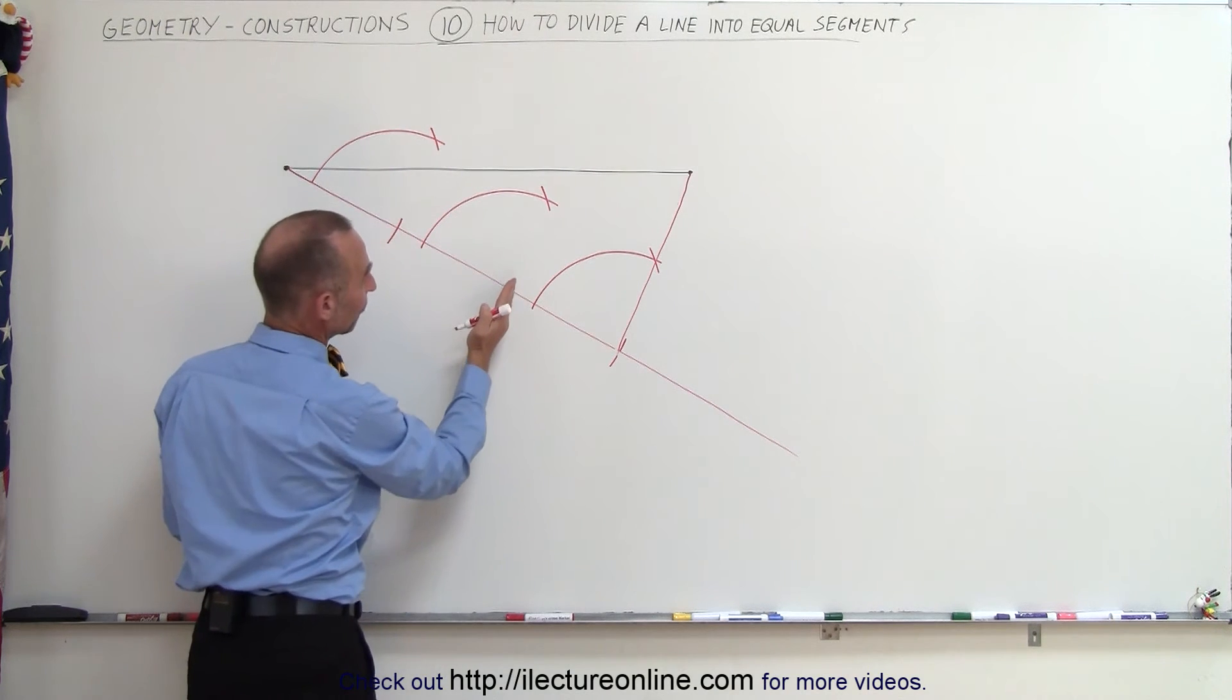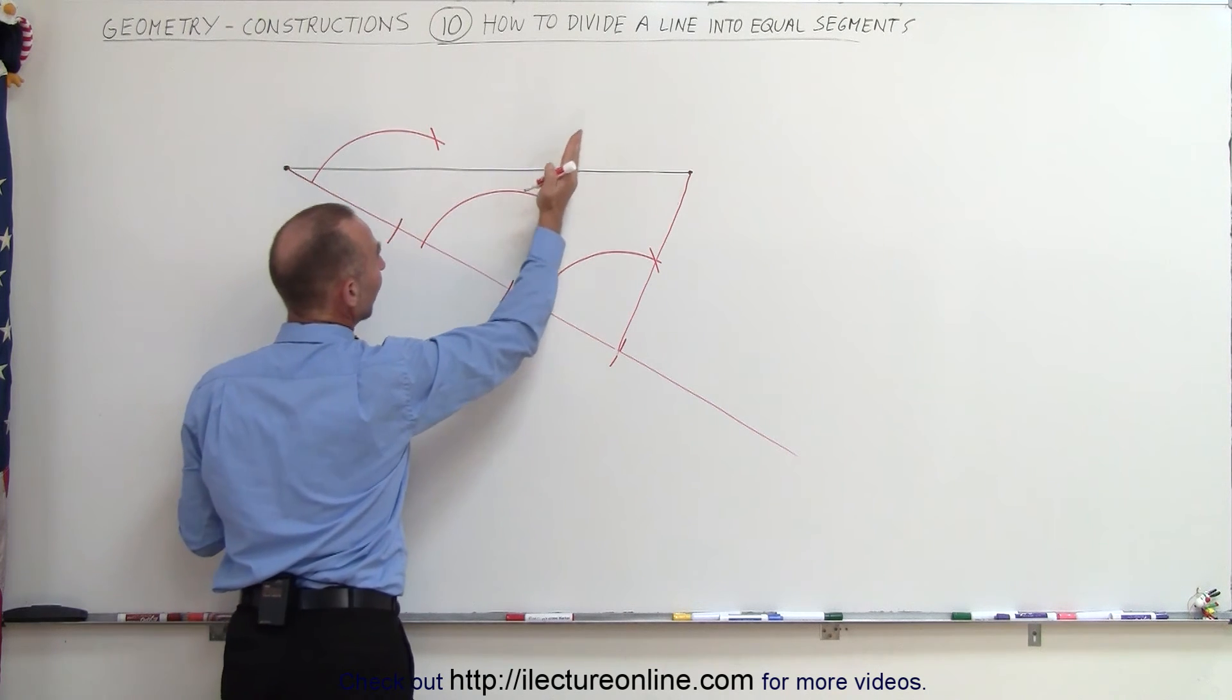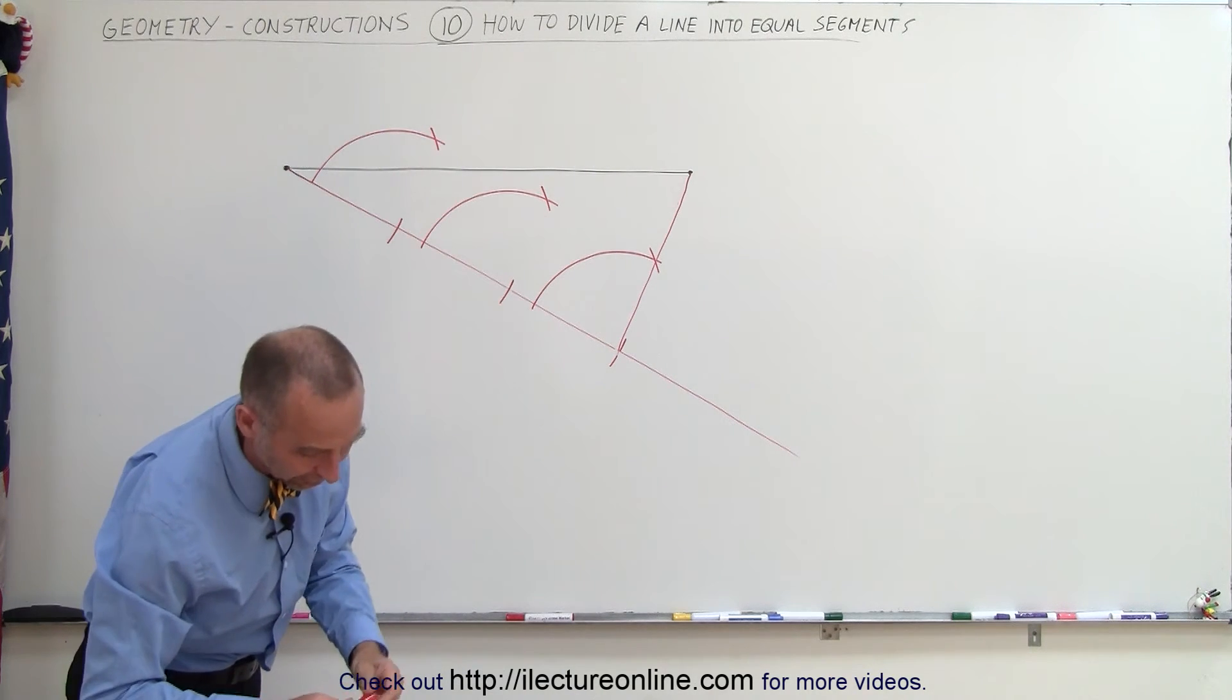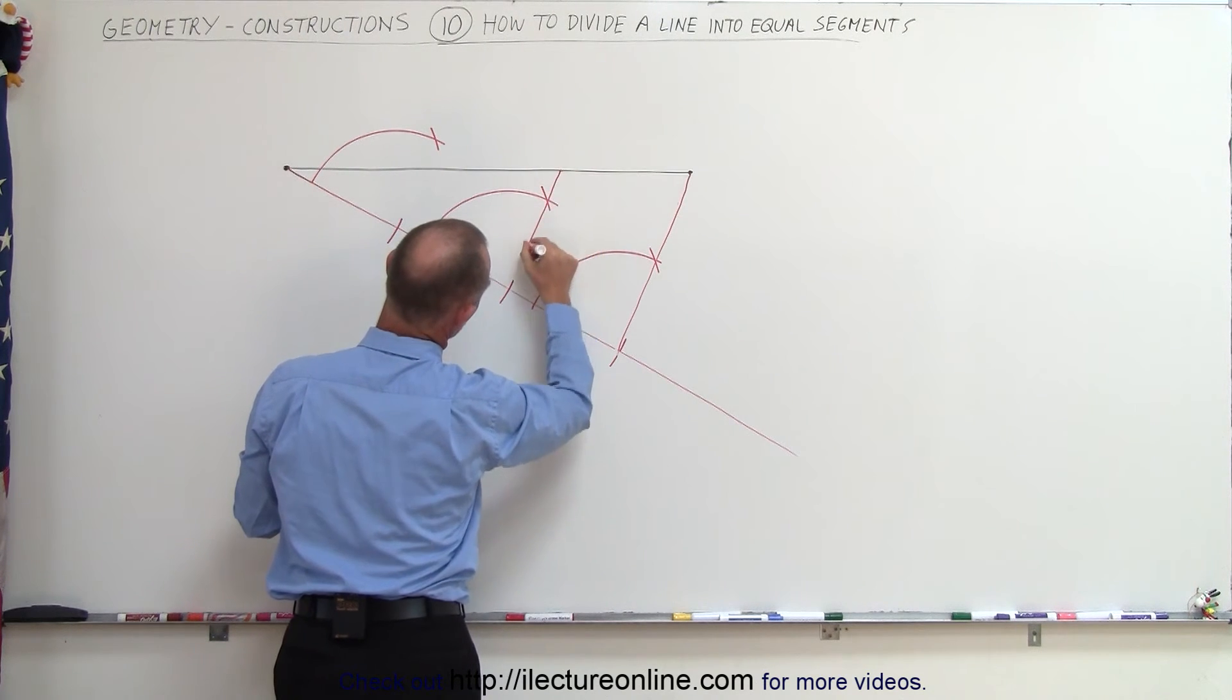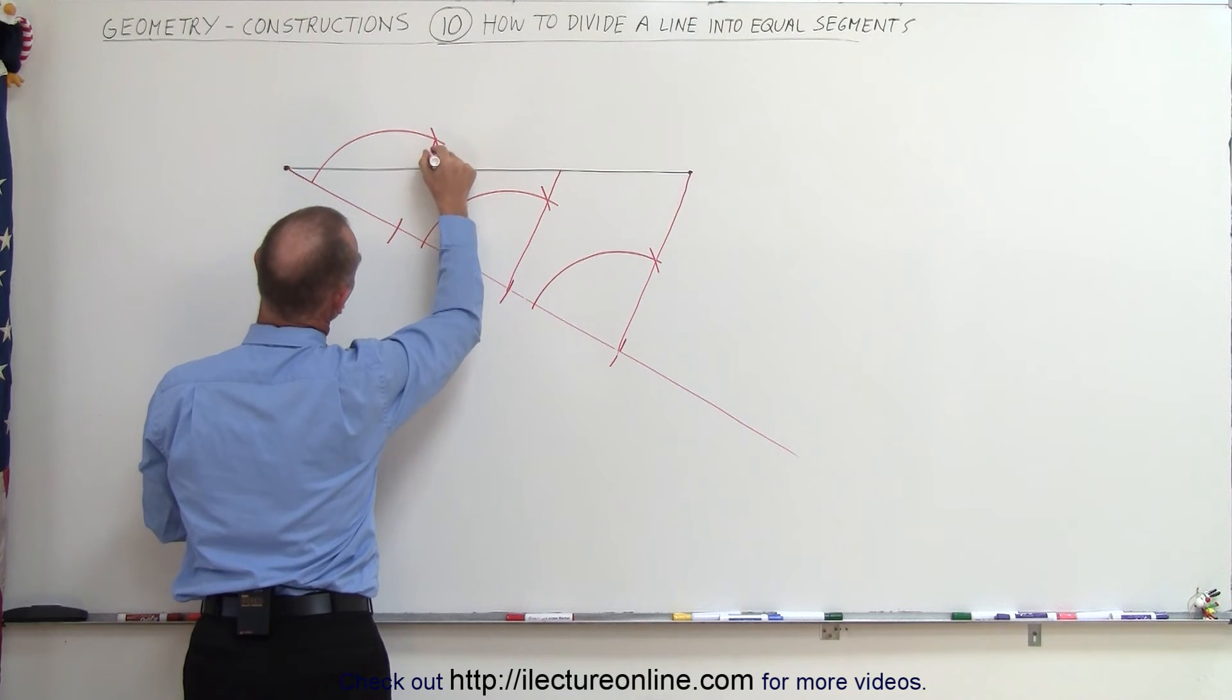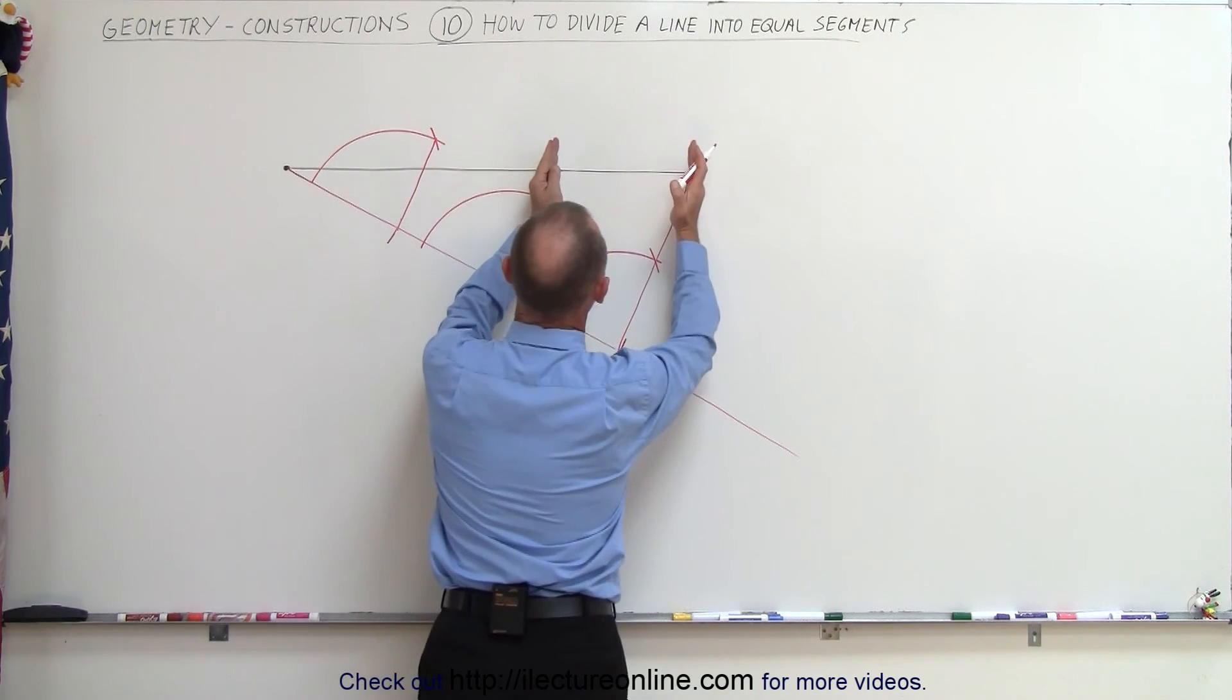Now what I do is I draw a line from here to where those two cross and from here to where those two cross and then the first line will be divided into exactly three segments of the same length. So I draw a line from there to there and I draw another line from there to there, like so. And that means this distance is exactly the same as this distance which is exactly the same as this distance.